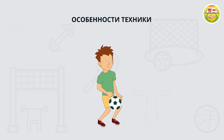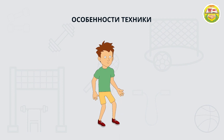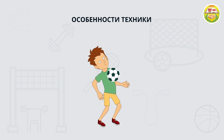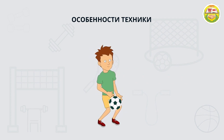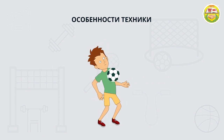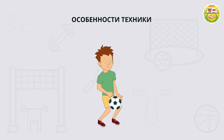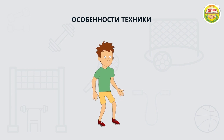Ноги можно держать на ширине плеч или чуть шире, но не слишком широко. В момент контакта с мячом туловище должен быть отведен назад принимающим волнообразным движением, а плечи и руки выставлены вперед. Если траектория мяча является кривой дугой, то корпус при столкновении делает уступающее движение назад.